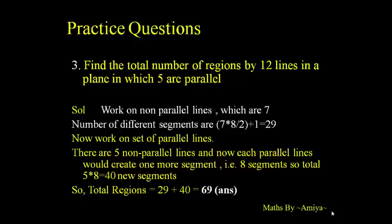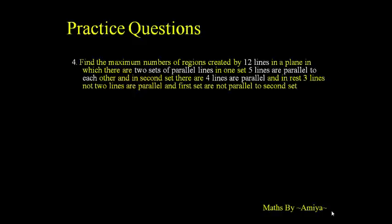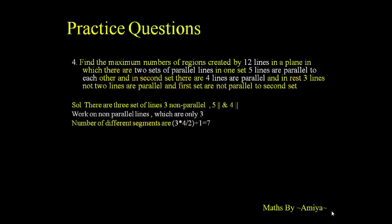Always first work on the non-parallel lines, then work on the parallel lines. Now the best conceptual question: find the maximum number of regions created by 12 lines in a plane where there are 2 sets of parallel lines — one set has 5 parallel lines, another set has 4 parallel lines, and the remaining 3 lines are non-parallel to each other and to both sets. Work on the 3 non-parallel lines first: σ3 + 1 = 3×4/2 + 1 = 7 regions.